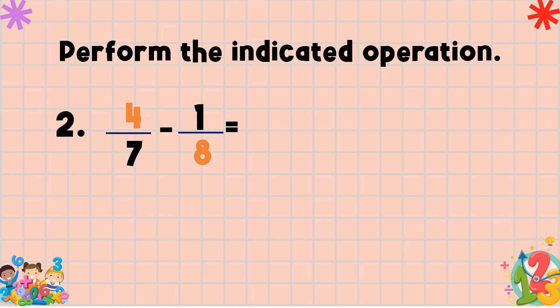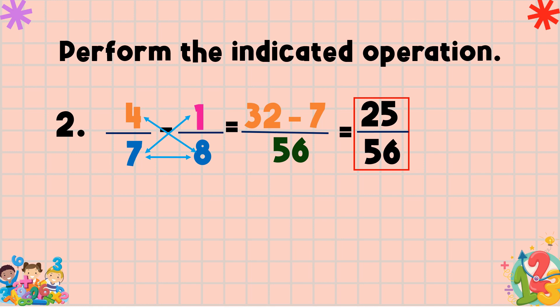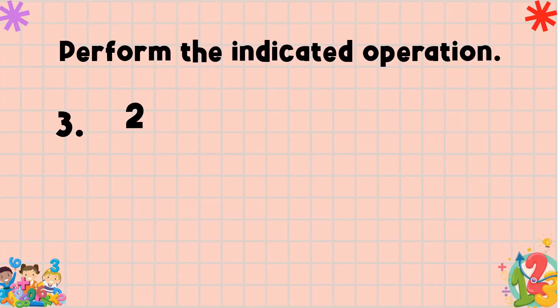Another example: four sevenths minus one eighth. Multiply the numerator of the first fraction by the denominator of the second — four times eight equals thirty-two. Copy the indicated operation. Then multiply the denominator of the first by the numerator of the second — seven times one equals seven. Multiply the denominators — seven times eight equals fifty-six. Perform the operation: thirty-two minus seven equals twenty-five. Copy the denominator, fifty-six. There is no common factor between twenty-five and fifty-six except one, so twenty-five over fifty-six is in lowest form.